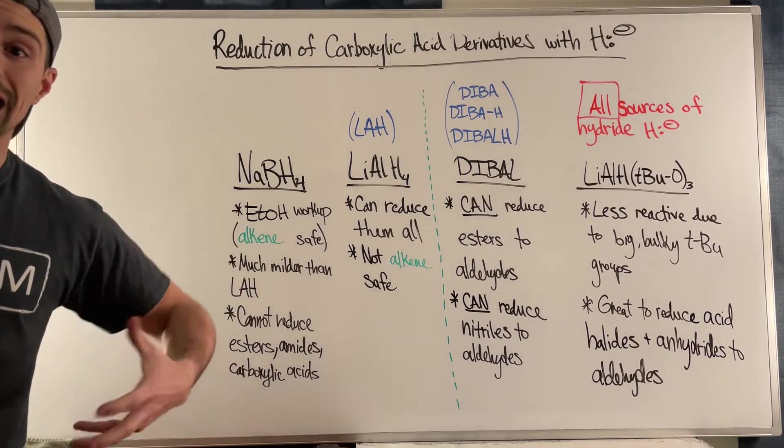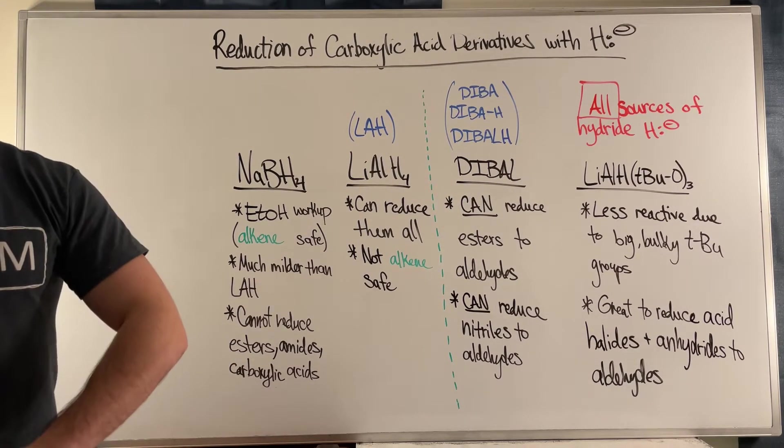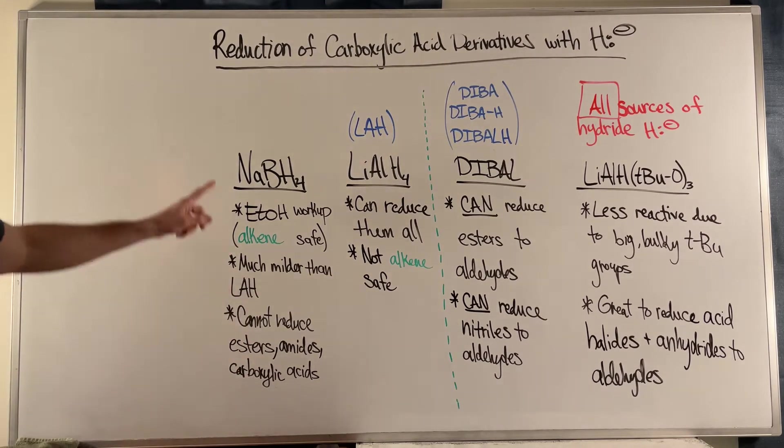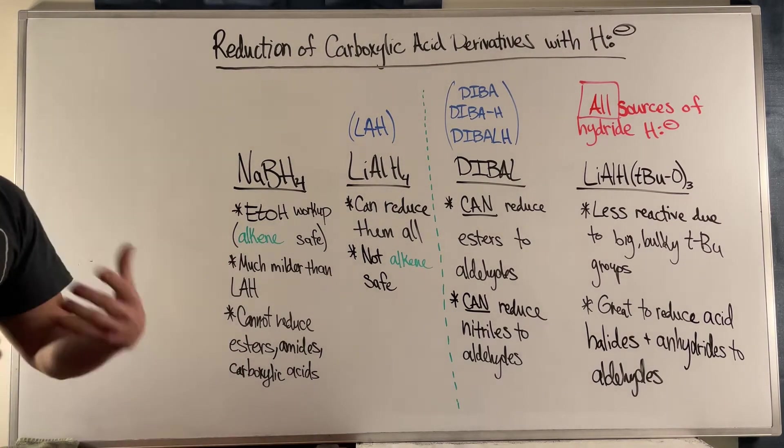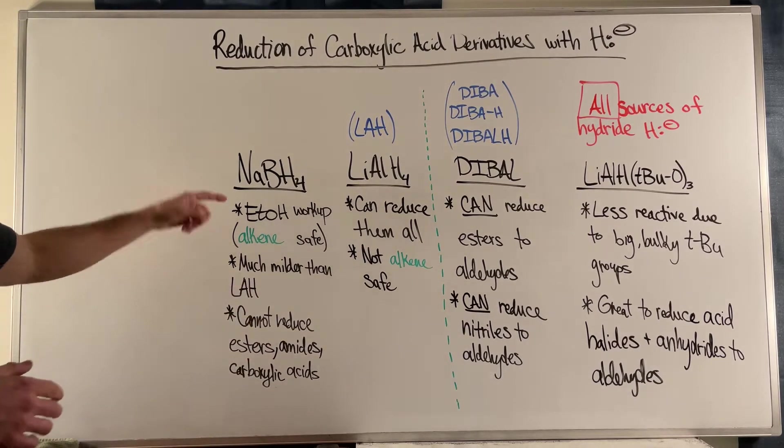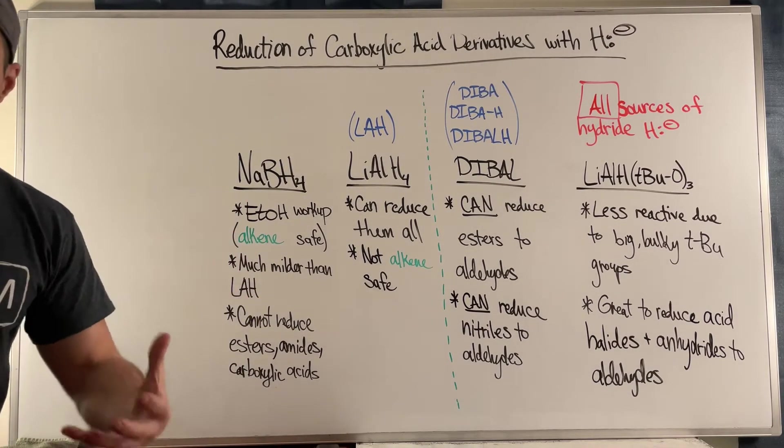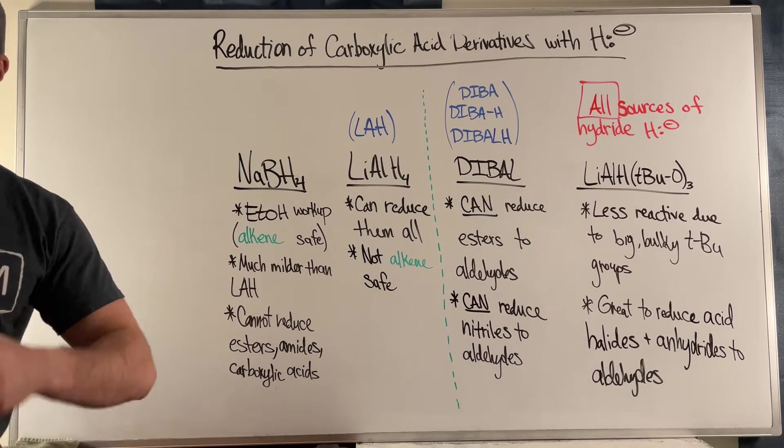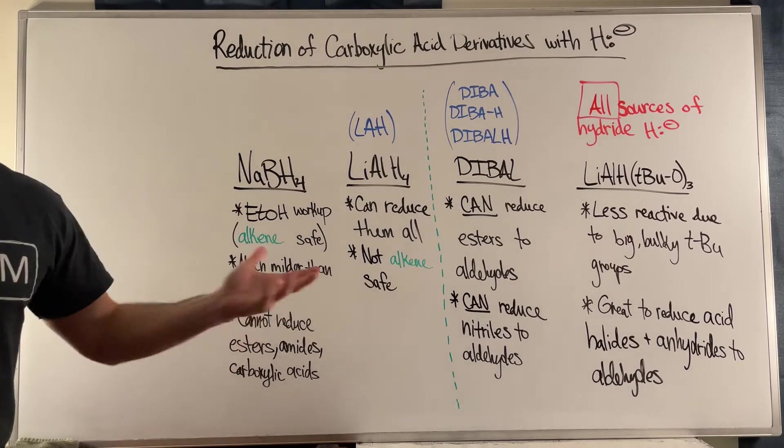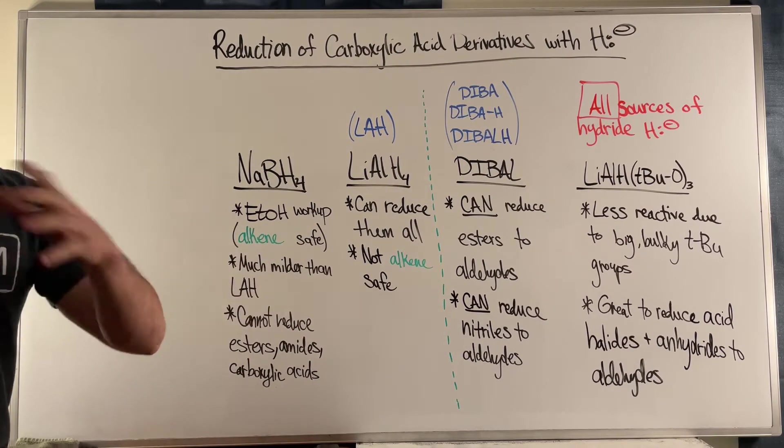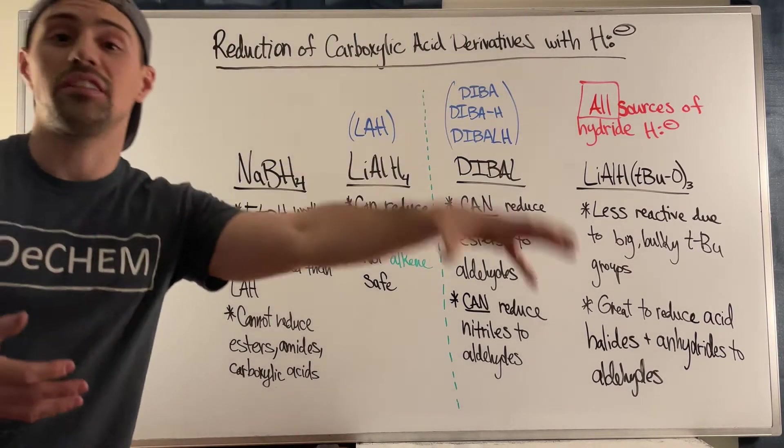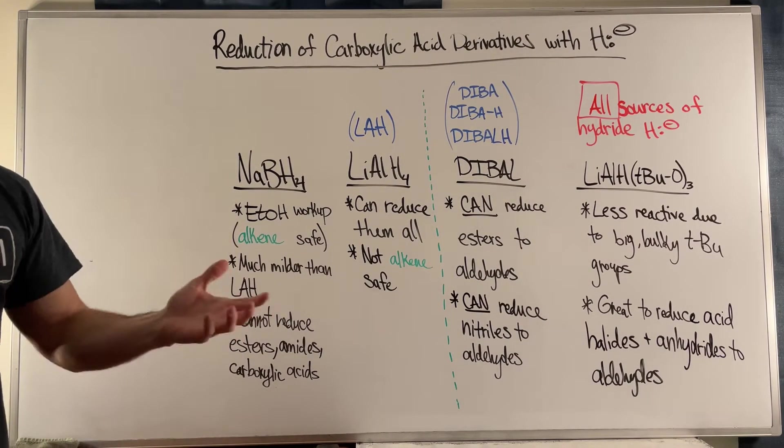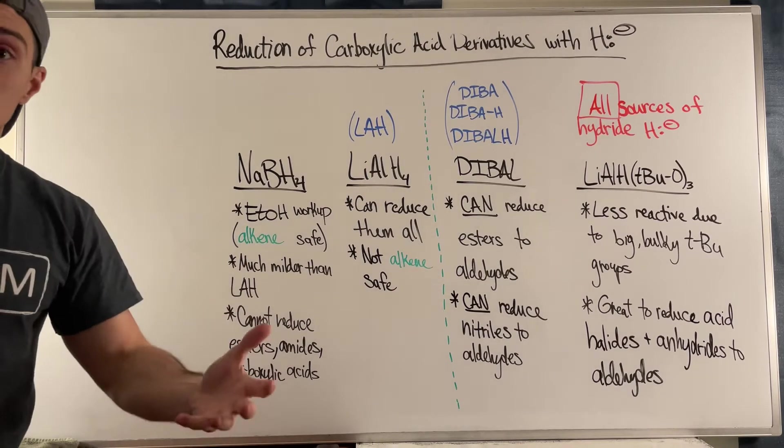We know from OChem 1 it can do aldehydes and ketones, and with your more reactive carboxylic acid derivatives like acid halides and acid anhydrides, it can work with those as well. The one plus about NaBH4 is that the workup isn't with a strong source of acid, it's with ethanol, an alcohol. So it's a really great option if you have an alkene, if you have a double bond or triple bond - it's safe, it's not going to do a Markovnikov addition and protonate that electrophilic double or triple bond.